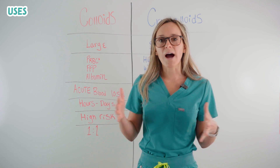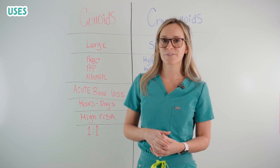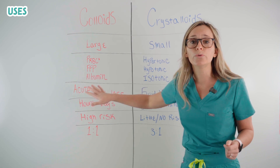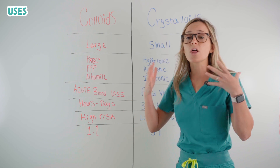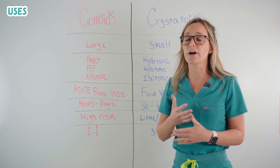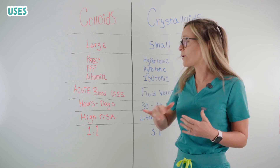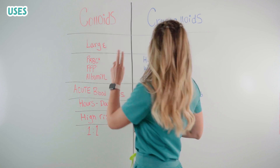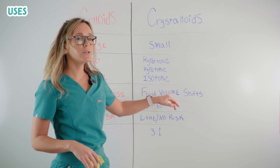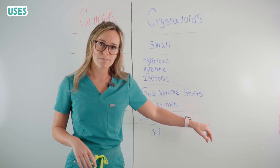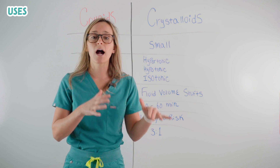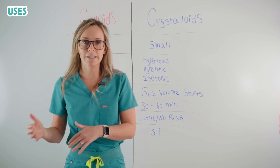Now for a quick review on why they're both used. Colloids are used for acute blood loss — think of a blood transfusion somebody gets when they're hemorrhaging or having acute blood loss. Crystalloids are used for fluid volume shifts. For example, isotonic solutions are used for hypovolemia.